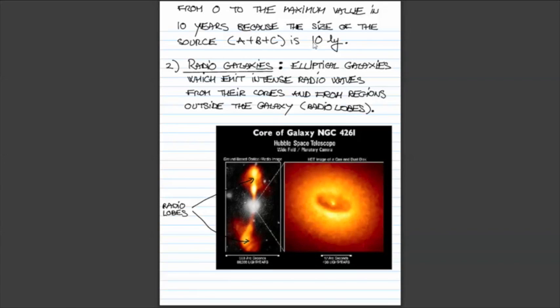The second group of these active galaxies, or galaxies with active galactic nuclei, are radio galaxies. They are typically elliptical galaxies, and they emit radio waves from the galactic center and from the regions outside the galaxy, so-called radio lobes.